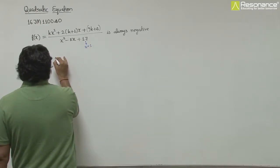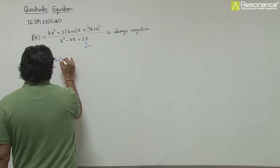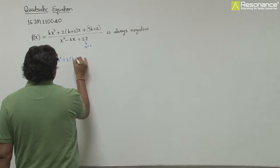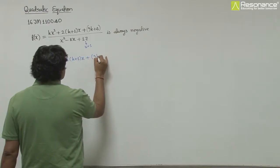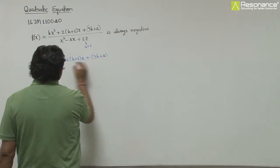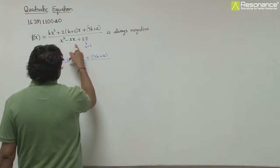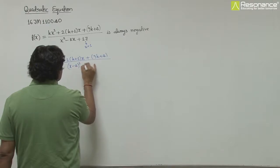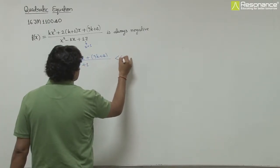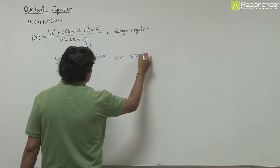That means we need kx² + 2(k+1)x + 9k + 4 divided by x² - 8x + 16, which is (x-4)² + 1, to be less than 0, always meaning for all x belongs to R.